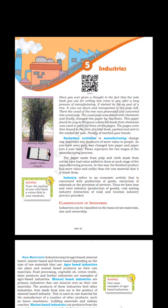Have you ever given a thought to the fact that the notebook you use for writing has come to you after a long process of manufacturing? It started its life as part of a tree. It was cut down and transported to the pulp mill, where the wood was processed and converted into wood pulp. The wood pulp was mixed with chemicals and finally changed into paper by machines. This paper found its way to the press where ink made from chemicals was used to print lines on the pages.